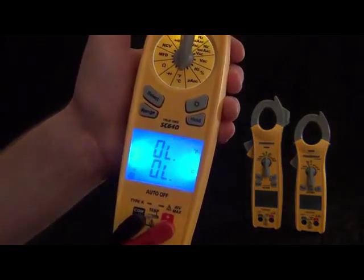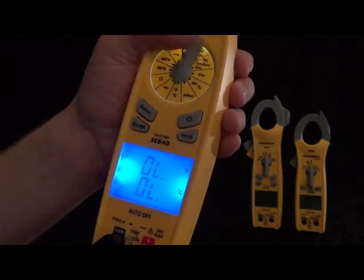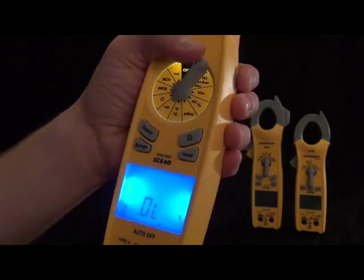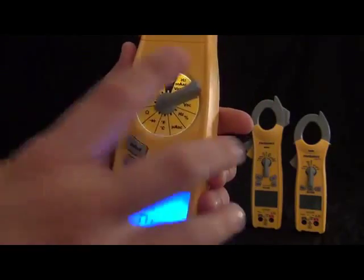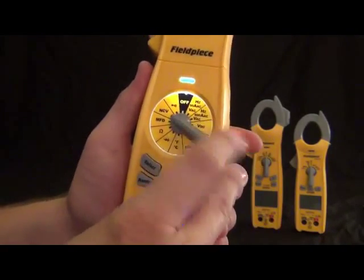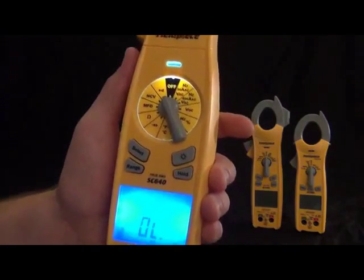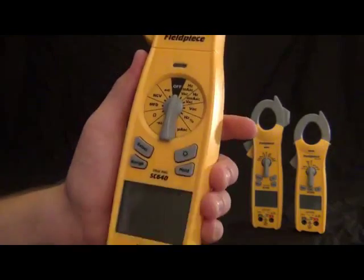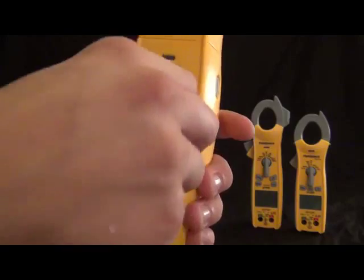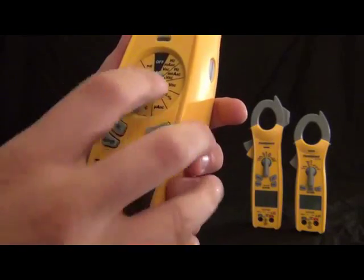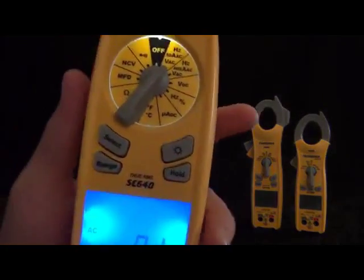All right. Now let's kind of just take a look at the buttons. We got your backlit button, your select button. This will just toggle through the ranges. So for example, amps, hertz, back. And so depending on which switch position, that select will toggle through the various things that switch position can measure.